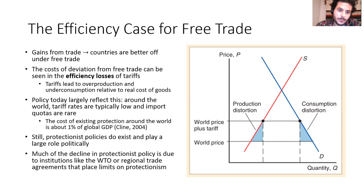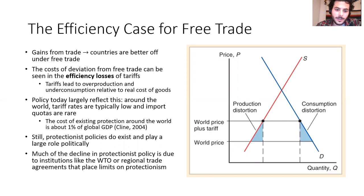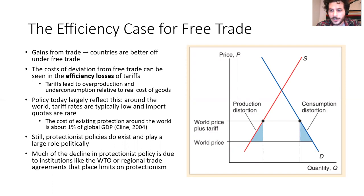Policy around the world today largely reflects the efficiency case for free trade. Tariff rates are typically low, and things like import quotas and export subsidies are rare. Every country has some form of tariff or other protectionist policy, but the impact is not as big as it was in the past. Recent estimates from the textbook — a little outdated from 2004, but not much has changed — put the cost of existing protection around the world at just about 1% of global GDP. So there are some efficiency losses, but it's just not that big of a deal anymore.